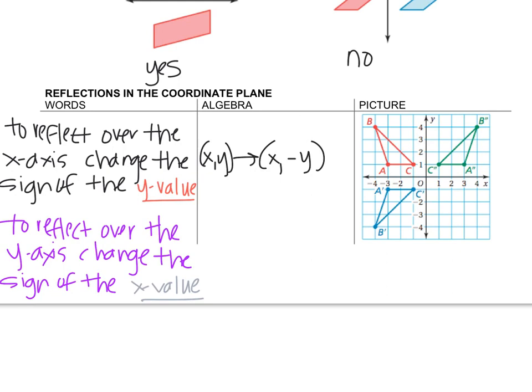To reflect over the y-axis, we would start with (x, y), but now we're just changing the sign of the x value, so that would change to (-x, y). And again, if x is already negative, then it turns positive.